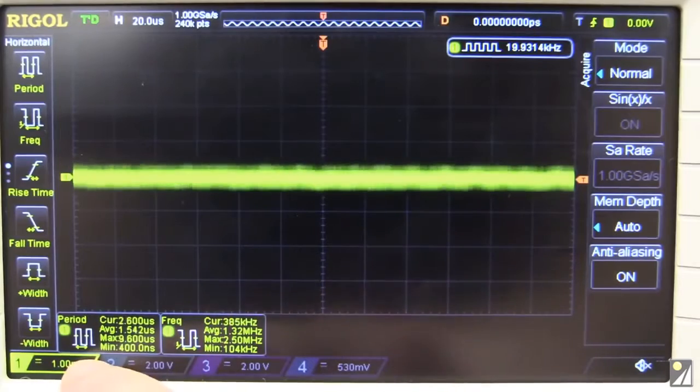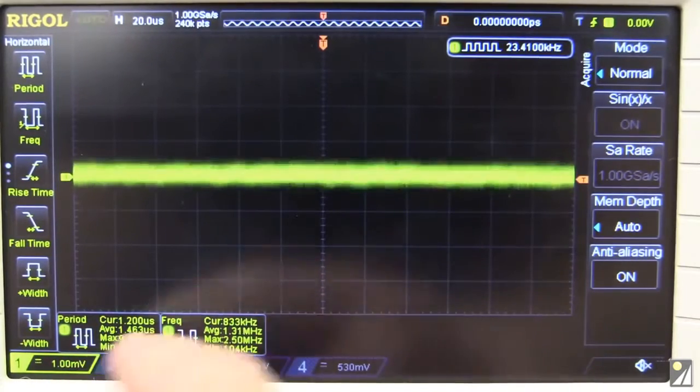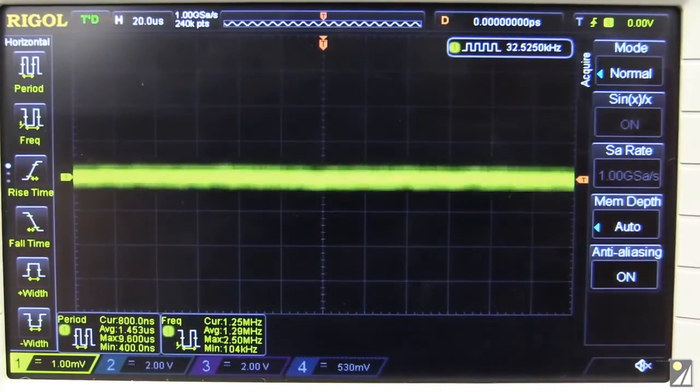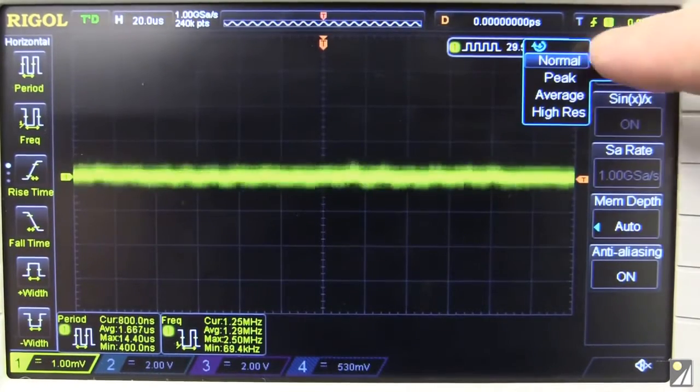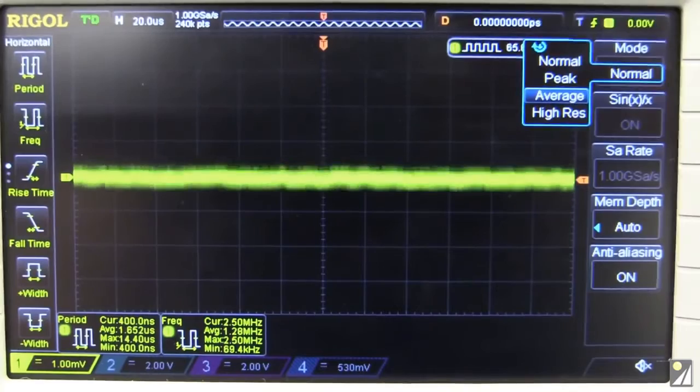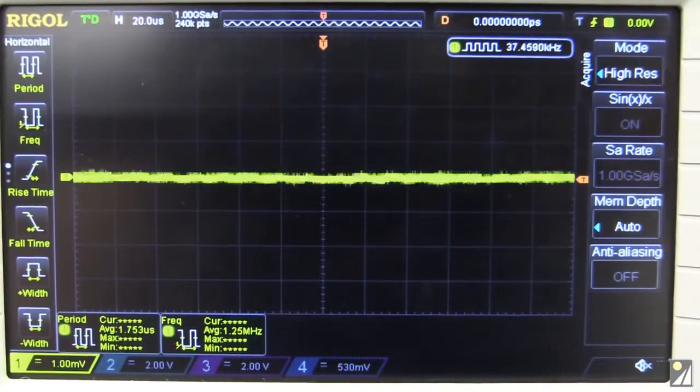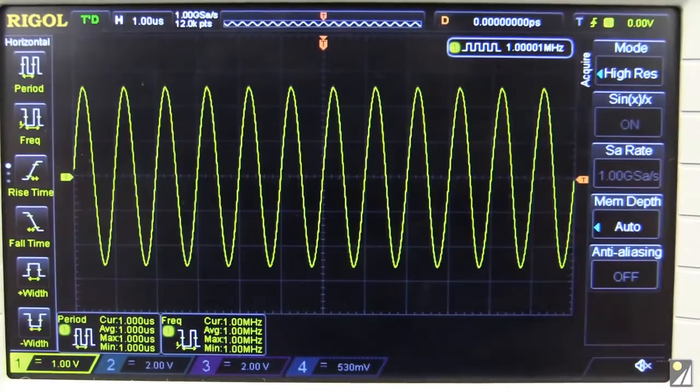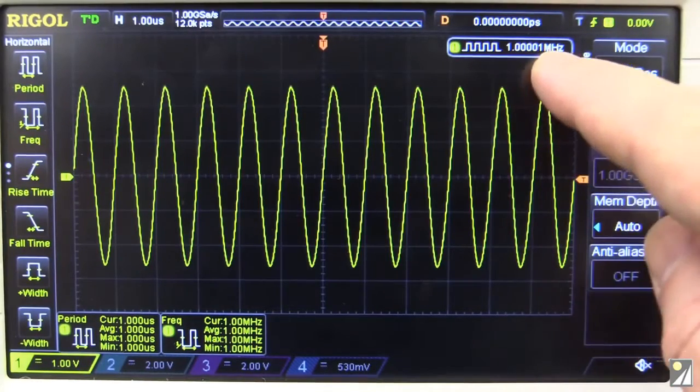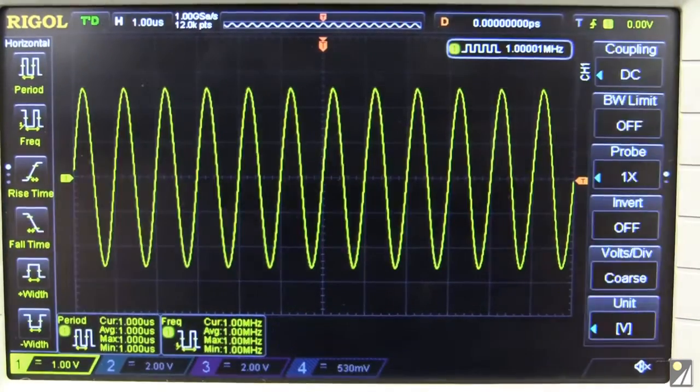And it does go down to one millivolt per division. In fact, if you get the hack for the thing, it does go down to 500 microvolts, but the hardware doesn't really support it properly. So don't bother. But it's got normal peak, average, and high-resolution mode as well, which works really nice. It's a reasonably low noise scope. And it's got a built-in hardware frequency counter as well. Fantastic.